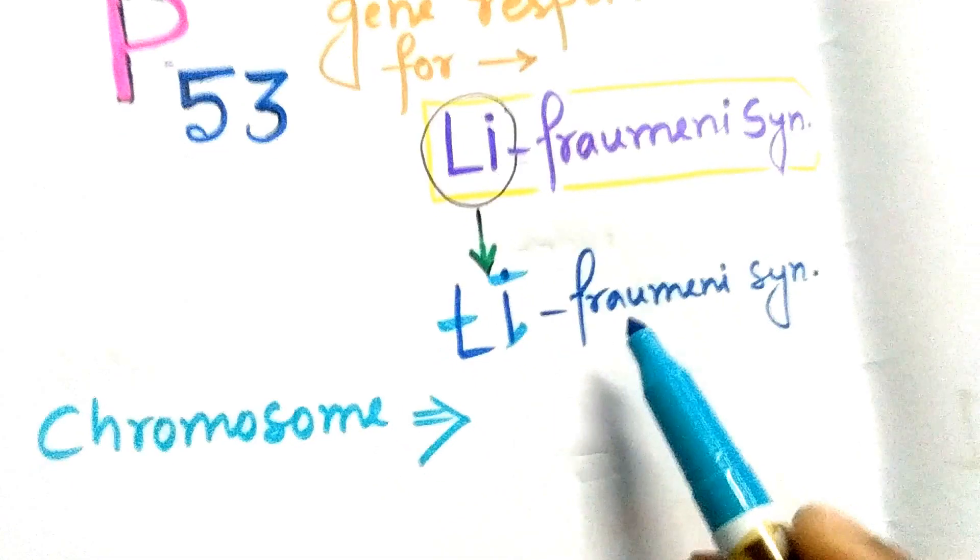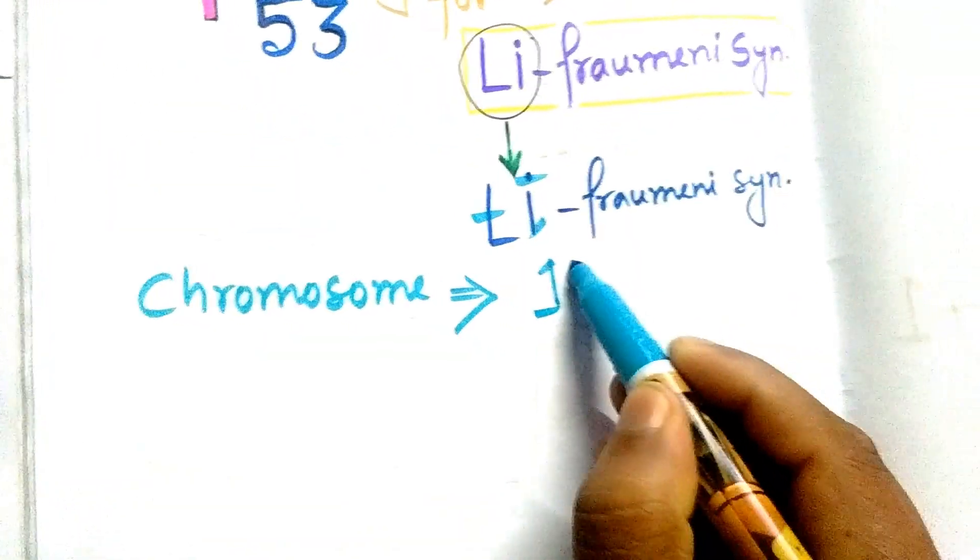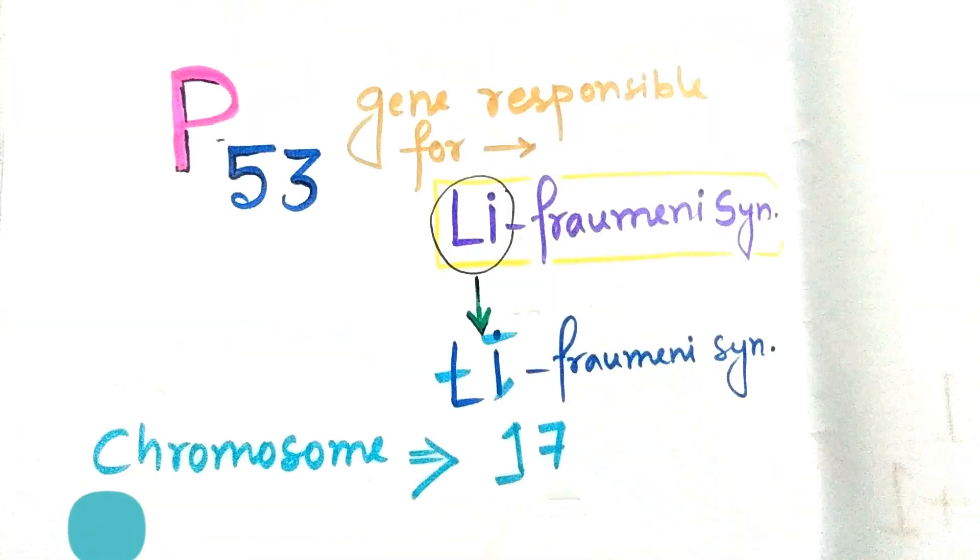Rotate it and the mirror image looks like 17. So the p53 gene location is on the 17th chromosome.